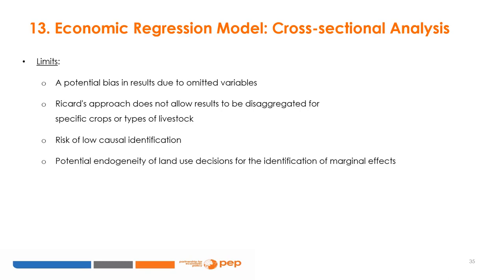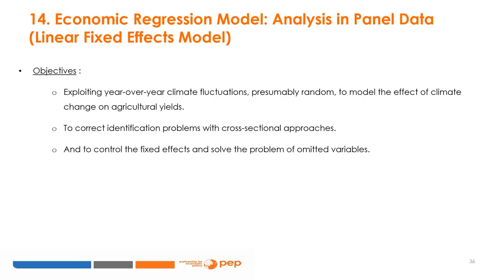Several limitations are known to exist in cross-sectional analysis. These include biases in results due to omitted variables, the inability to disaggregate results for specific crops or types of livestock, the risk of weak causal identification, and the potential endogeneity of land-use decisions for the identification of marginal effects. Regression on panel data allows us to exploit climatic fluctuations from one year to the next — presumably randomly — to model the effect of climate change on agricultural yield, correct identification problems with cross-sectional approaches, and control fixed effects to solve the problem of omitted variables.